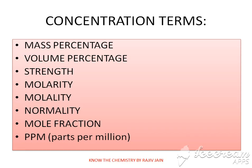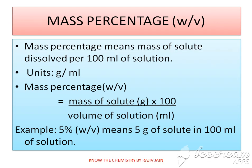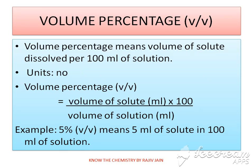The concentration terms we are going to cover are: mass percentage, volume percentage, strength, molarity, molality, normality, mole fraction, and ppm. Mass percentage has no unit. The formula is: mass of solute divided by mass of solution, multiplied by 100. Mass percentage (w/v) means mass of solute dissolved in 100 mL of solution, in grams per milliliter.